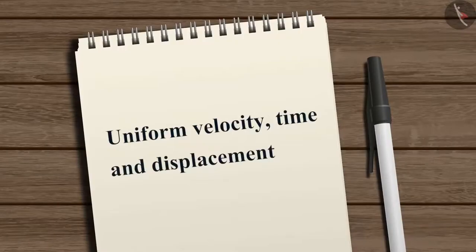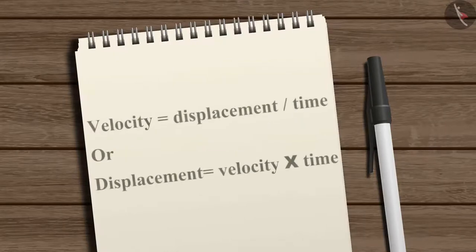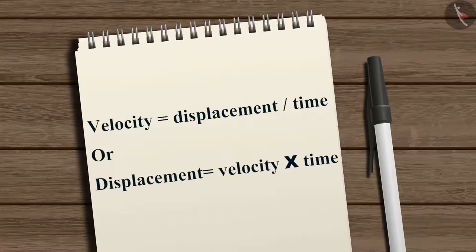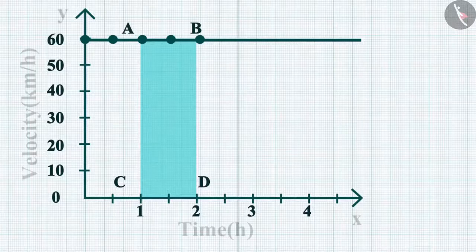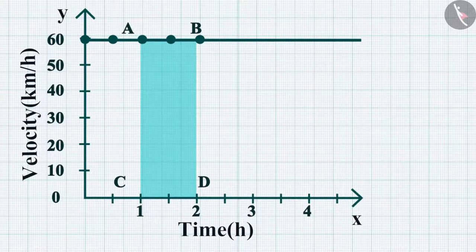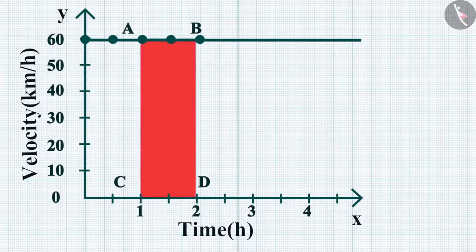We know that velocity equals displacement divided by time, so displacement equals velocity multiplied by time. Therefore, the area enclosed by the velocity-time graph and the time axis equals the magnitude of the displacement. Since the car moves in a single direction, the magnitude of displacement equals the distance covered.